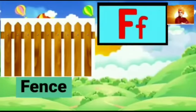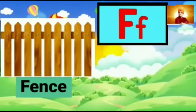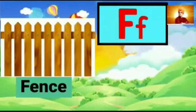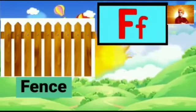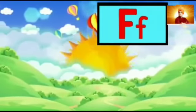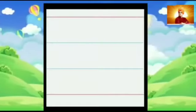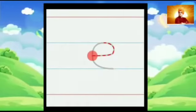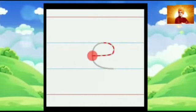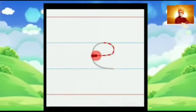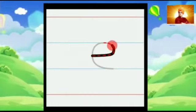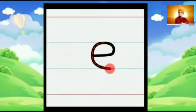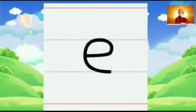Ok children, now we are going to learn how to write small E and small F in a four-line using strokes. Now we are going to write small E. Make a sleeping line, go up, make an open curve. Small E.